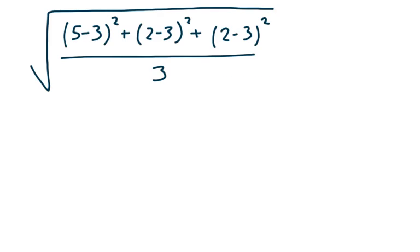Here we've got a really big square root symbol, a long division bar. We have 5 minus 3 squared, plus 2 minus 3 squared, plus 2 minus 3 squared, all over 3.